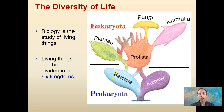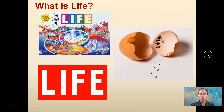There's also protists and archaea as part of the total six kingdoms. So the question is: what is life? There's a humorous image here with an egg and a chicken crawling out of it, but how do we actually define what life is?